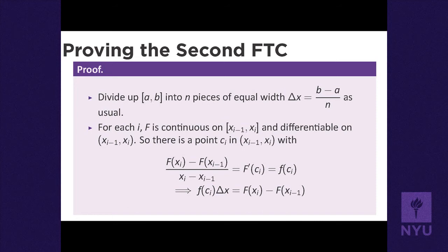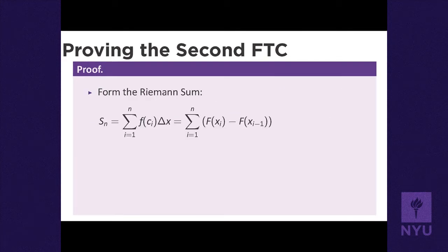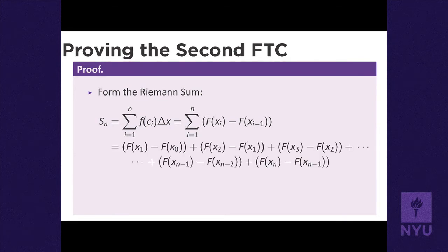When we compute our Riemann sum, we add f(cᵢ)×Δx for all i from 1 to n. We've chosen our cᵢ's so that each product equals F(xᵢ) - F(xᵢ₋₁). Writing out the sum: [F(x₁) - F(x₀)] + [F(x₂) - F(x₁)] + [F(x₃) - F(x₂)] + ... + [F(xₙ) - F(xₙ₋₁)].